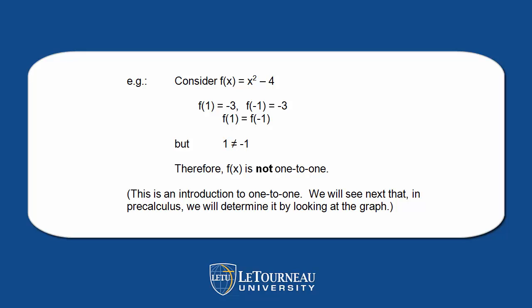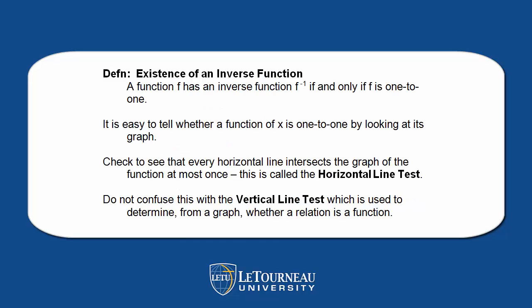So consider here, we have f(x) = x² - 4. f(1) equals -3, f(-1) equals -3, but f(1) equals f(-1), but 1 doesn't equal -1, therefore not one-to-one.